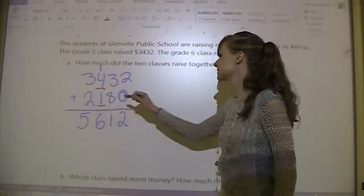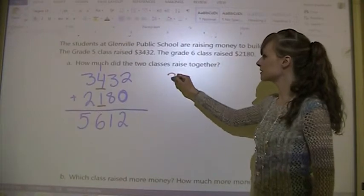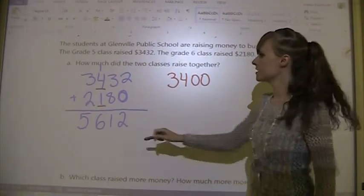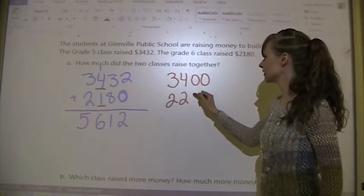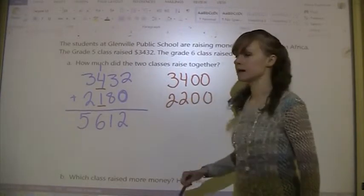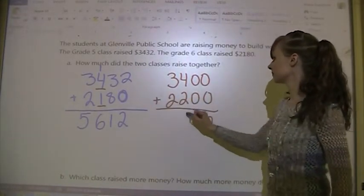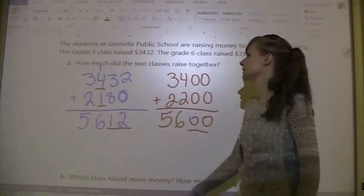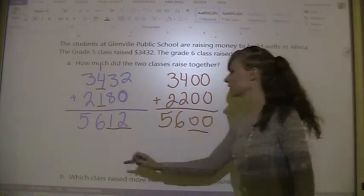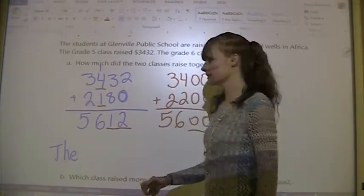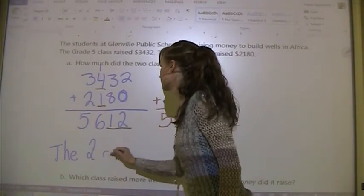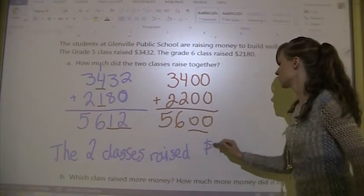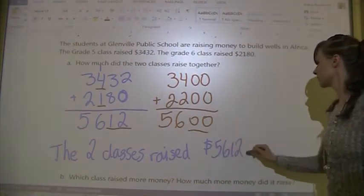Now we're going to estimate to make sure that this answer is reasonable. We'll round to the nearest hundreds place. This one rounds to 3,400 because the three is lower than five. This one is going to round to 2,200. The eight bumps the one up to a two. We're going to add them together again and it's only 12 different, so that means my answer is reasonable. The two classes raised $5,612 altogether.